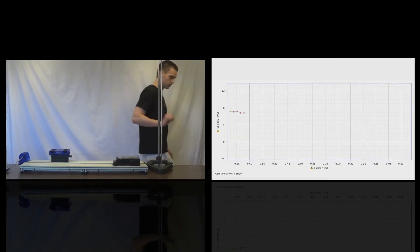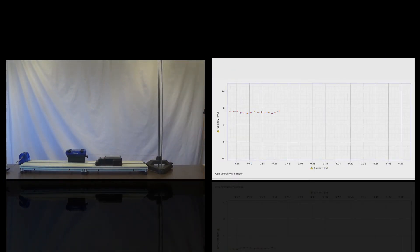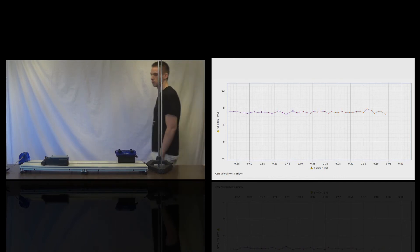In this test, the constant velocity cart moves to the left. It pulls on the string, and the other cart, whose position and velocity are graphed on screen, moves to the right.